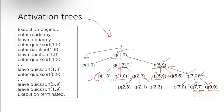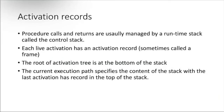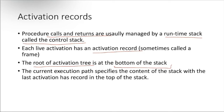When only one element remains, it can be sorted trivially. This is how the quicksort activation tree is represented. Activation records and procedure calls and returns are usually maintained by a runtime stack called the control stack. Each live activation has an activation record, and the root of the activation tree is at the bottom of the stack.